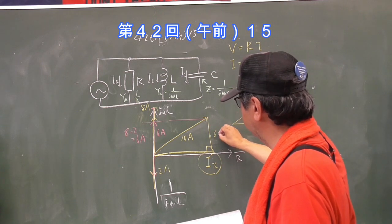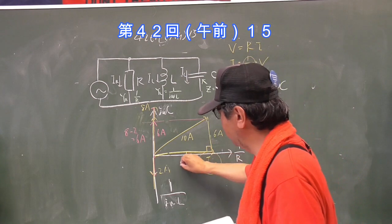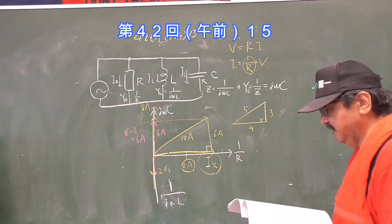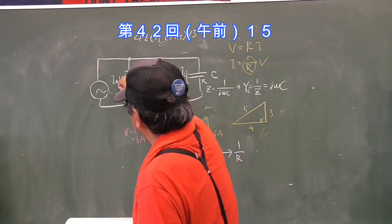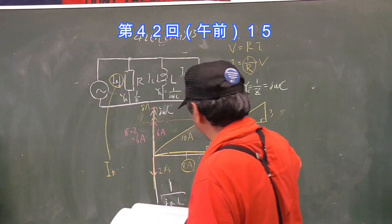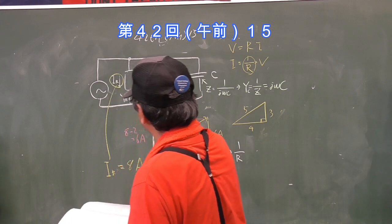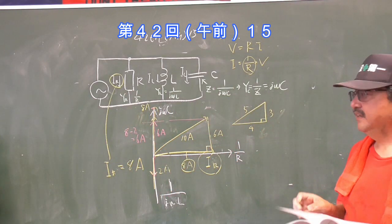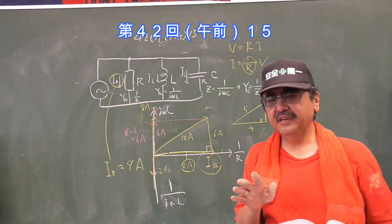比が3:4:5、1:2:√3、1:1:√2といろいろあります。これは4の2乗は16、3の2乗が9、16たす9で25になります。だから√25は5だからこうなるよ、というのは知っといた方がいい。そうするとこれで10対6ですね。10対6だとしたらここは8Aかなというのが出てくるわけです。答えはIrイコール8A、まあそういった感じで出てくるわけです。